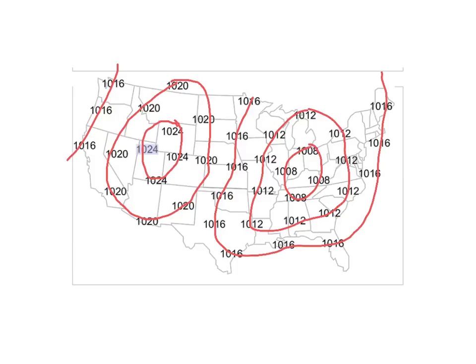Number two asks you to identify the high and the low. High pressure is greater than the surrounding air, and low pressure is lower than the surrounding air. For part A, label the high with a blue H. Looking at either 1024 or 1008 — 1024 has our high, so label that with a blue H. And 1008 is our low, so label that with a red L. Now we have one and two done: our isobars, and our high and low pressure centers identified.